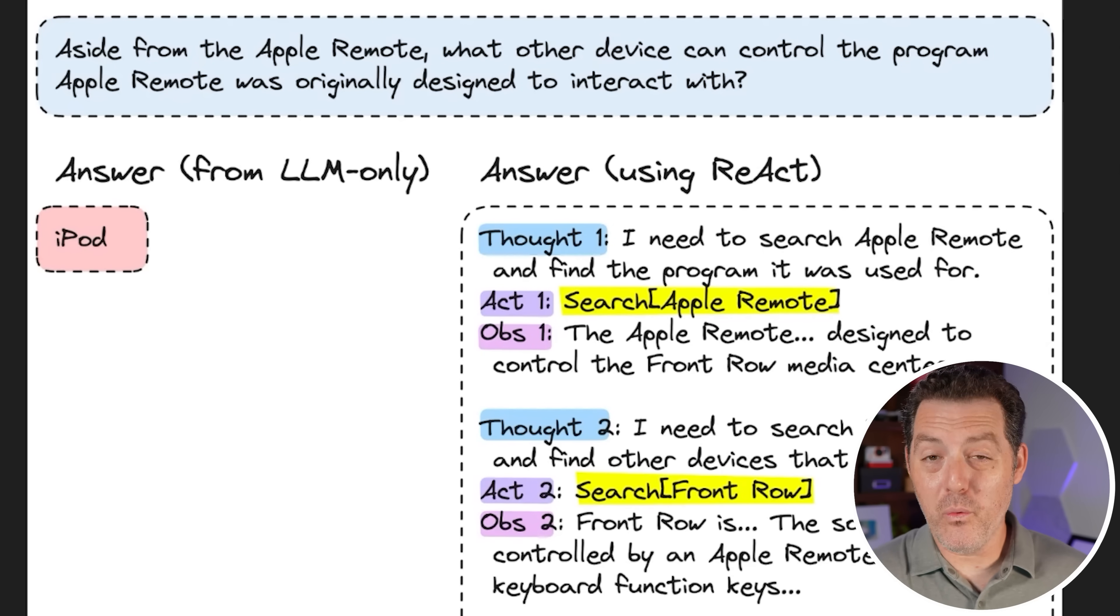And RAG is not only powerful with large language models, but when you start to abstract things and use agents, it becomes even more powerful. And RAG is one of the main tools that agents use to have all of this additional knowledge. So let me show you this example. And so what we're looking at is we have a question: Aside from the Apple remote, what other device can control the program Apple remote was originally designed to interact with? Now, if you ask the LLM directly, it's going to give you a very basic direct answer: iPod. Now, if we use agents with the power of RAG, we can allow the agents to iteratively come up with a plan, do the research, incorporate external knowledge sources, and then come up with an even better answer.